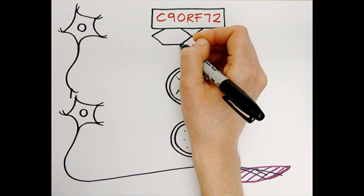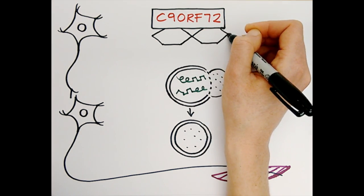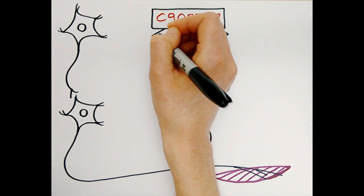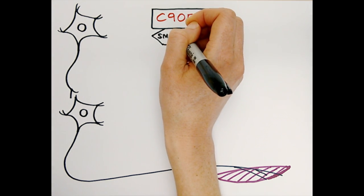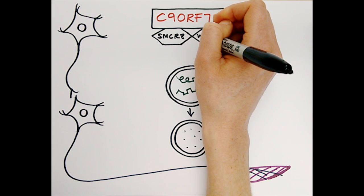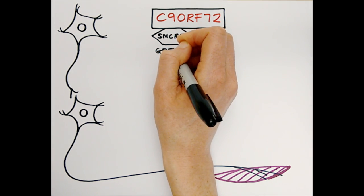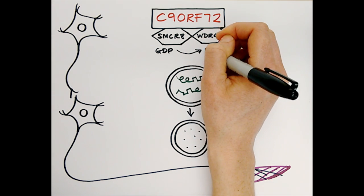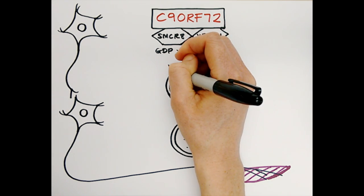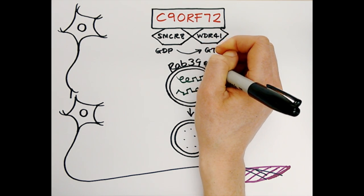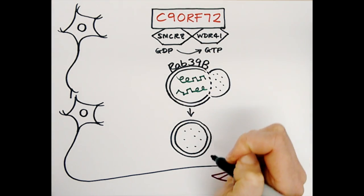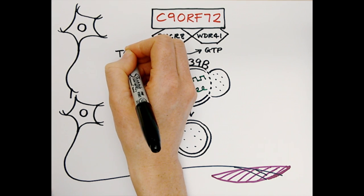Firstly, the authors show that C9-ORF72 works as part of a complex. It binds to two key proteins, SMCR8 and WDR41, and only when these three proteins are bound together is this able to act as a GDP-GTP exchange factor, thus promoting the activity of RAB-GTPases. In particular, this is true for RAB-39B, which helps in the early steps of the autophagy process.